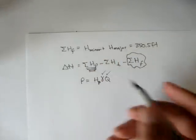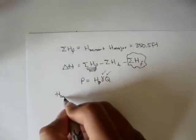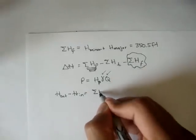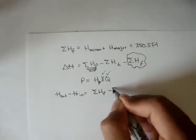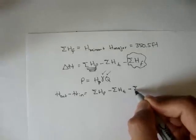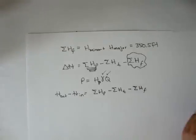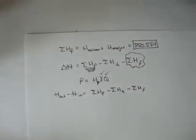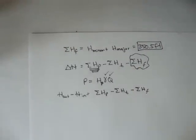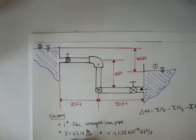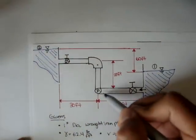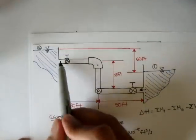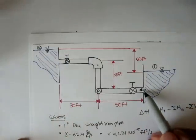So anyway, remember our change in total energy head is the energy head out minus the energy head in, and that's equal to the summation of all the pump heads minus the summation of all the turbine heads minus the summation of all the frictional head losses, which again is up here. And if we look back at the picture, we know that the water is going this way. So point two would be our out, and point one would be our in.